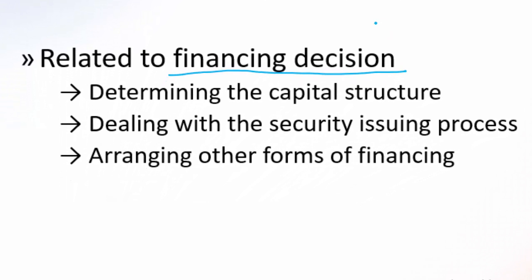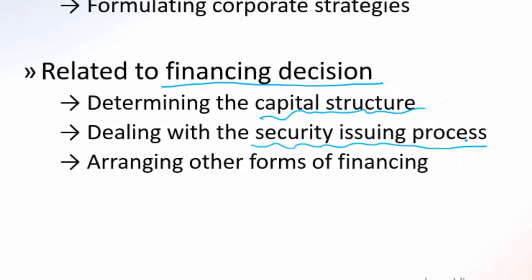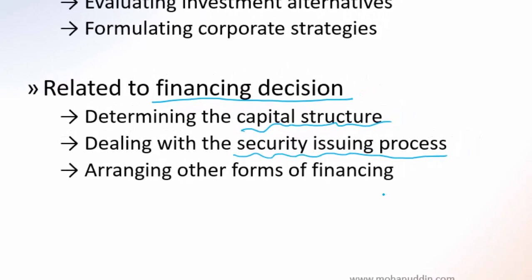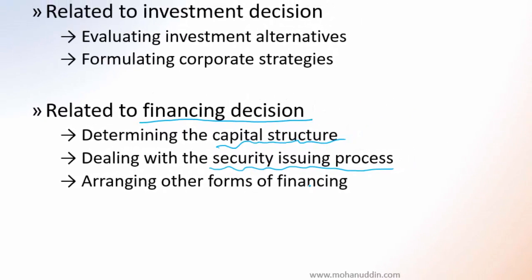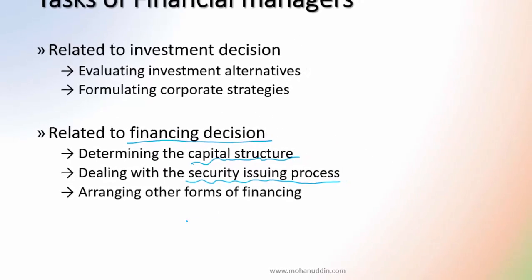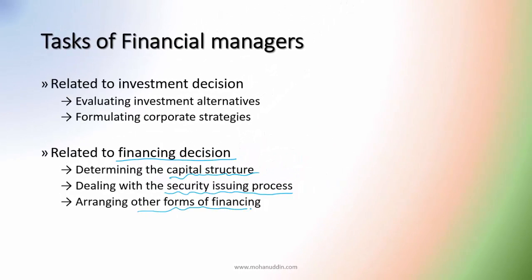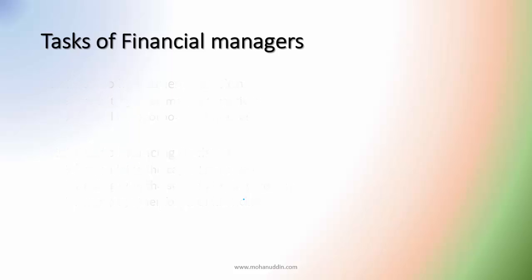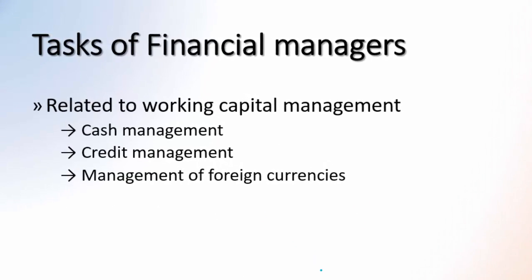Another area of the financial manager's task is related to the financing decision of the firm. Financing decisions involve how the firm will raise its necessary capital — how much money should come from equity, how much from debt, and so on. This includes dealing with the security issuing process: when the firm wants to raise capital, it may issue securities like shares or bonds. The financial manager also arranges other forms of financing as necessary.